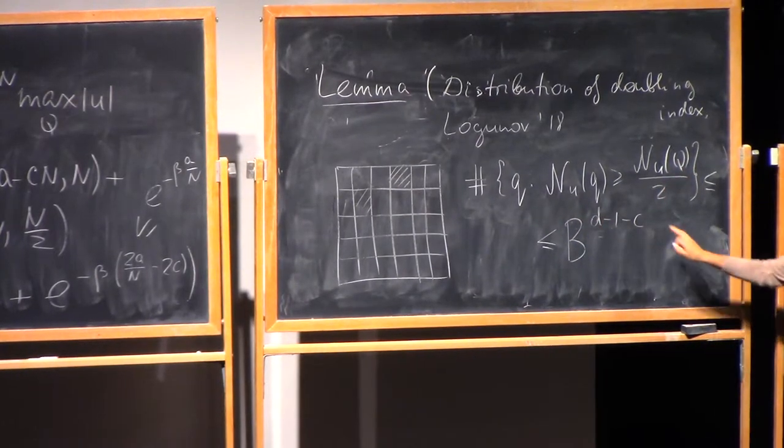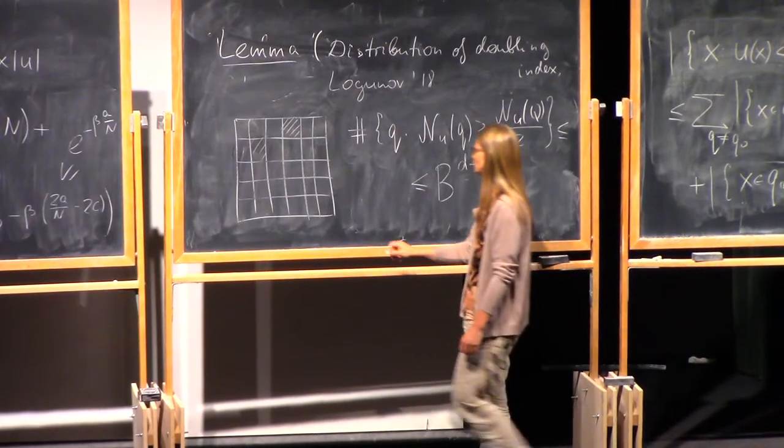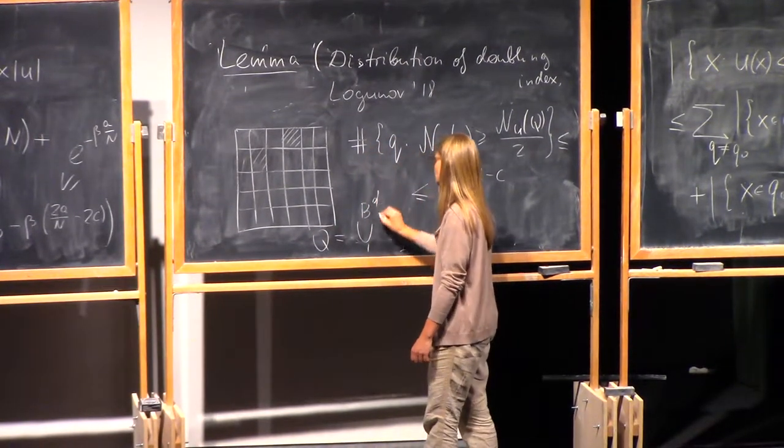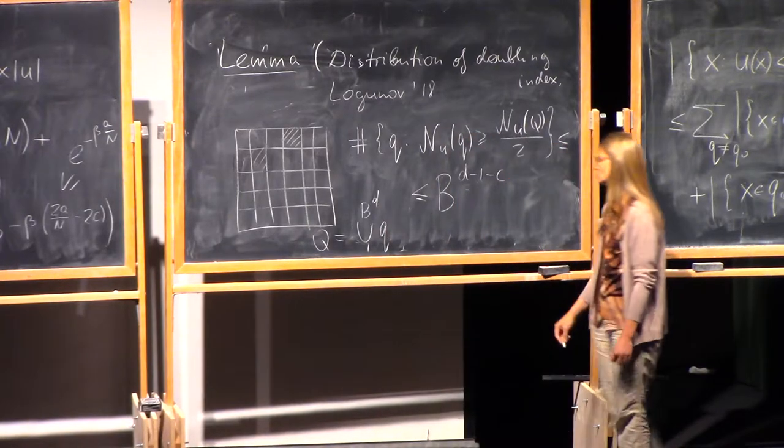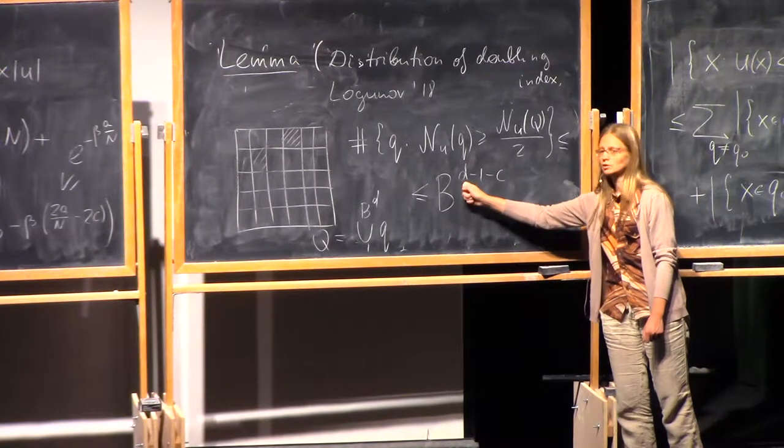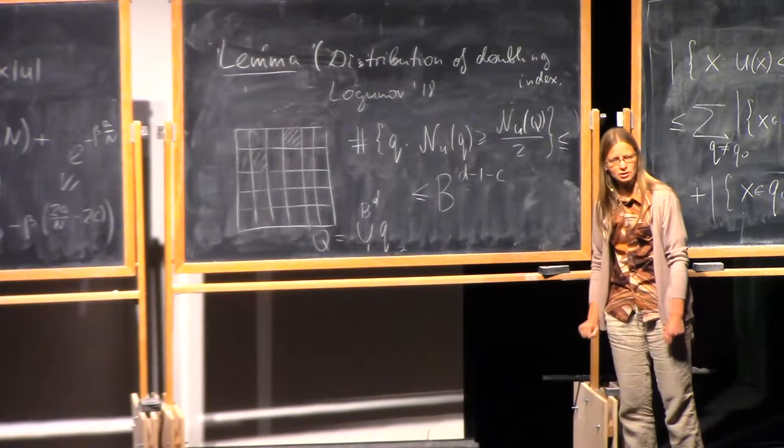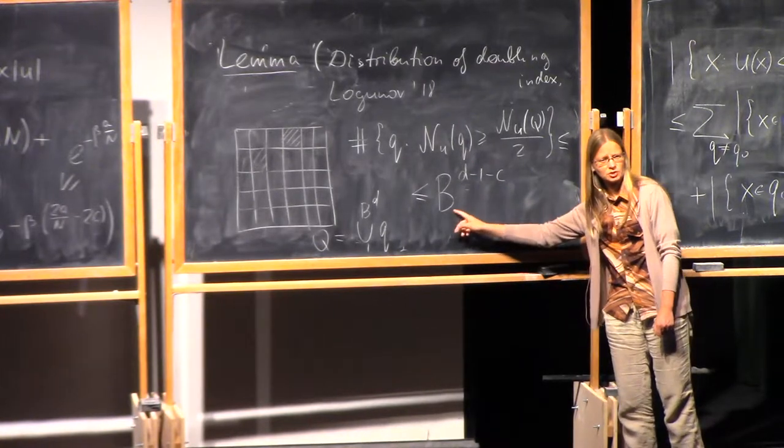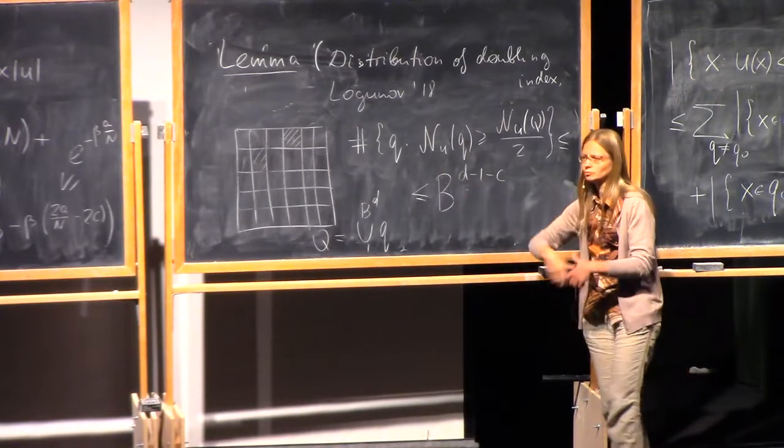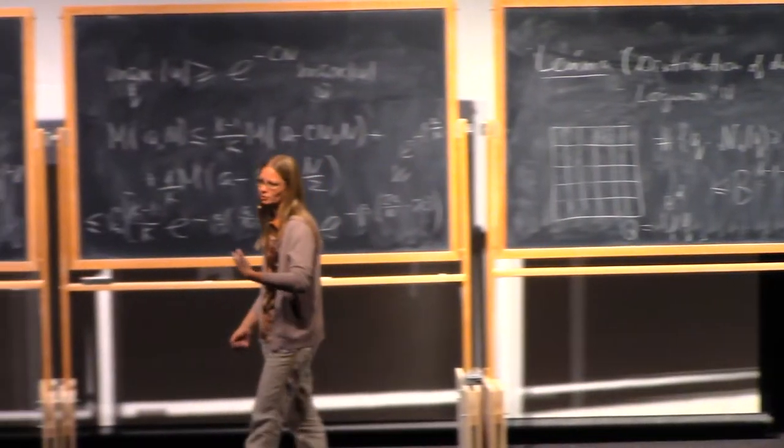There is a constant C and a constant B_0 so that if you divide Q into B to the power d small cubes, the number of cubes with large doubling index is bounded by B^(d-1-C). We did it yesterday without this C. It is simple. The truth says you can do one dimension further.